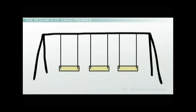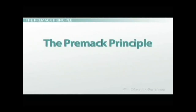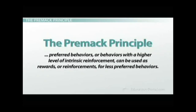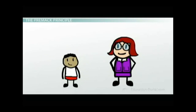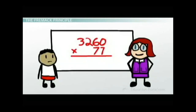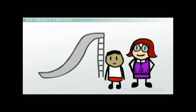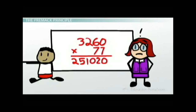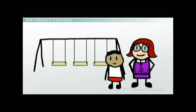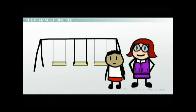Premack would say we can understand Miguel's intrinsic motivation for each activity by rank-ordering them by probability. His most common activity was the slide; his least favorite — the one with the least intrinsic reinforcement — was the swings. The Premack principle states that preferred behaviors, or behaviors with a higher level of intrinsic reinforcement, can be used as rewards for less preferred behaviors. So if Miguel's teacher knows his favorite thing is the slide, she can offer five extra minutes on the slide as a reward for doing his math homework. If she had offered time on the swings instead, that would not motivate him.